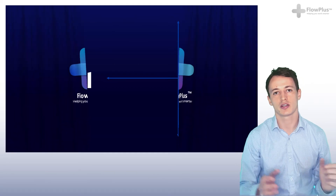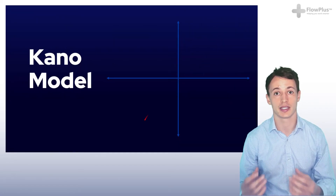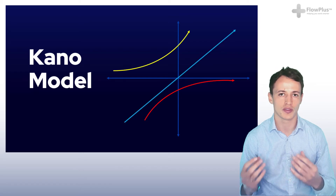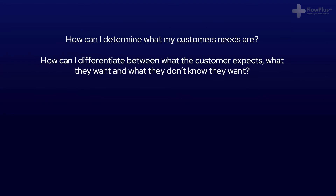In this module we'll shift our focus to our customers to identify what they want in their products and services and what they really value. The Kano model is a means of identifying the voice of the customer — what are my customers' needs, what do they want in a product or service, what do they expect, and in some cases what do they want but not know it yet.